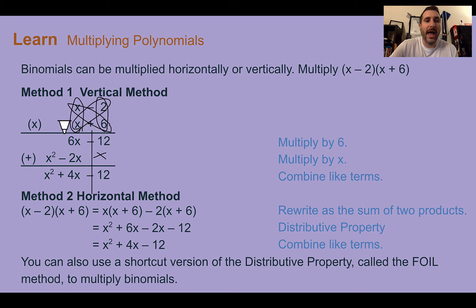Now, I'm going to add straight down. They should be lined up if we had it in standard form to begin with. So negative 12 plus nothing is negative 12. 6x plus negative 2x is 4x. And nothing plus x squared is x squared. So multiplying the binomial, we end up with this.